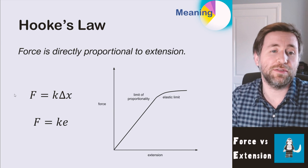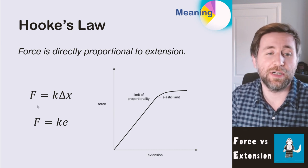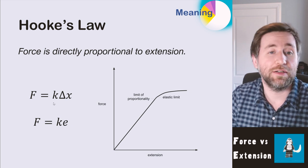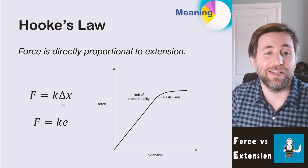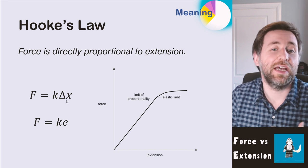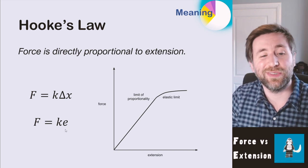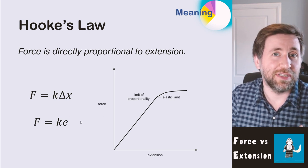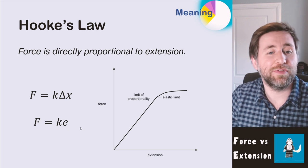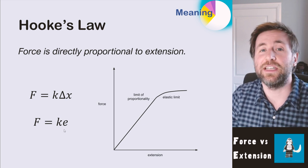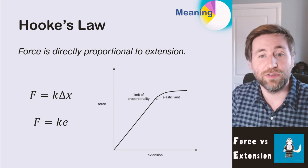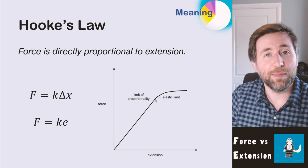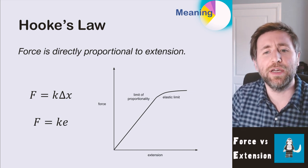Hooke's Law states that force is directly proportional to extension. There are two ways of writing this in algebra: both mean force equals spring constant times extension. I write it as F = kΔx, where delta means a change in and x means length. In AQA they use e for extension, but I prefer Δx because lowercase e is used for the exponential number in A-level physics.